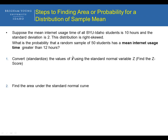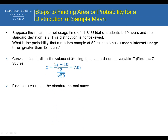We want to find the z-score for 12 hours, so we take 12 hours minus the population mean of 10 hours, divided by our standard deviation of 2, and then that's divided by the square root of our sample size of 50. Solving for this, we get a z-score of 7.07.